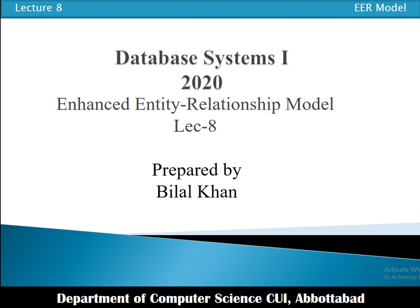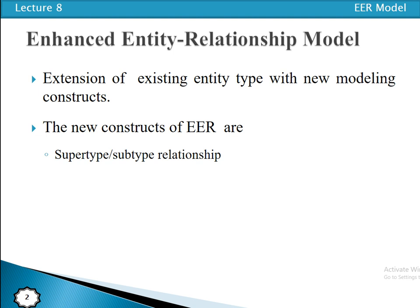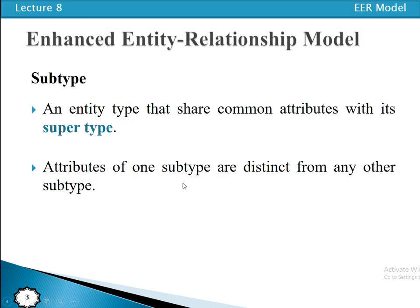In previous videos we discussed the concept of the Entity Relationship data model, which has three main components: entity, attribute, and relationships. Now we are covering the concept of the Enhanced ER model, or Enhanced Entity Relationship model. This model is an extension of the existing ER model with new modeling constraints, providing extensions to entity types in the form of super types, sub types, and the relationship between them.